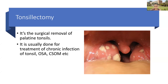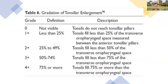Sensory supply is from the glossopharyngeal and lesser palatine nerves. Important structures in relation to the inferior pole of the tonsil are the glossopharyngeal nerve, lingual artery, and internal carotid artery. Tonsillectomy is the surgical removal of the palatine tonsils, done usually for chronic infection, OSA, CSOM, etc. There is a grading for tonsillar enlargement from 0 to 4+ based on the space occupied between the anterior tonsillar pillars. Grade 4+ is when tonsils fill 75% or more — commonly known as kissing tonsils.